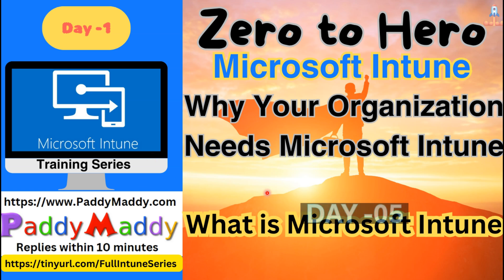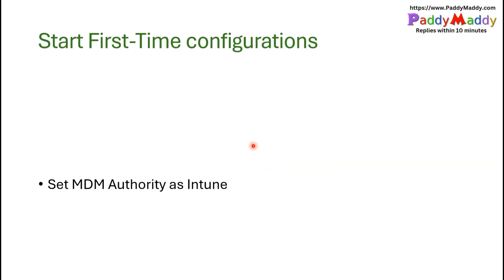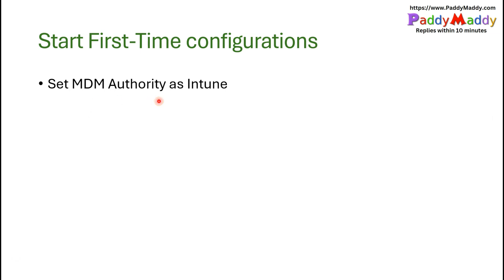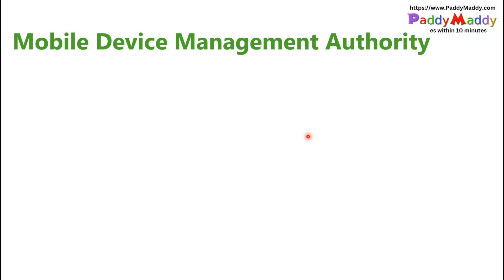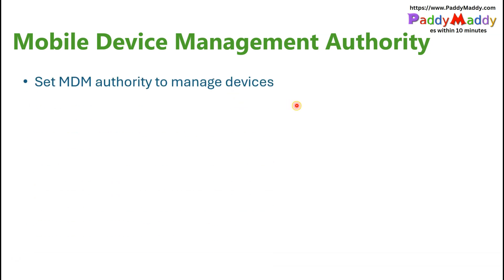We are at Day 05 of this series and we will look into the first M configuration — setting up the MDM authority. When we talk about MDM authority, we have a couple of options available. This is the first configuration we need to configure in Microsoft Intune if you are trying to learn it.